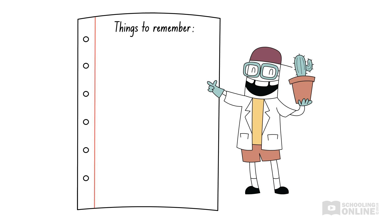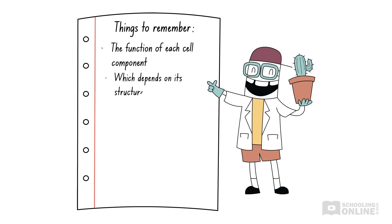During the HSC biology course, you should learn the function of each individual component which is linked to its structure. You should also understand that each component of a plant cell has a distinct function, and all the components work together to keep the cell alive.